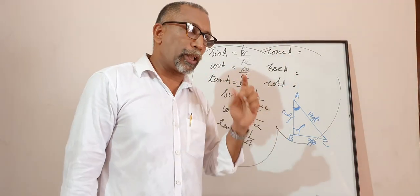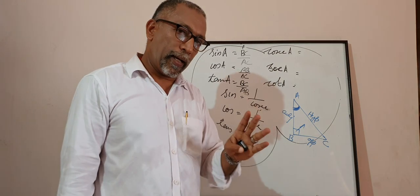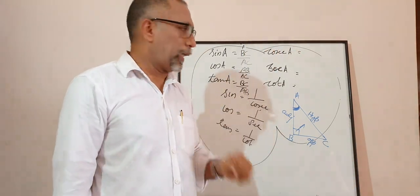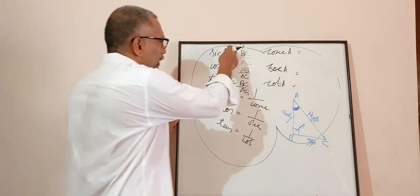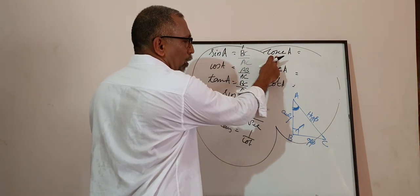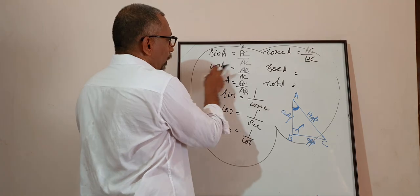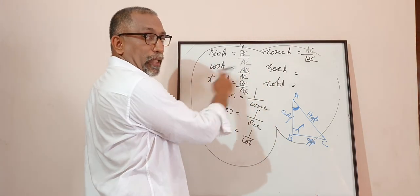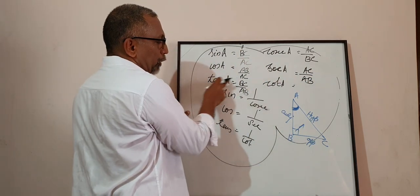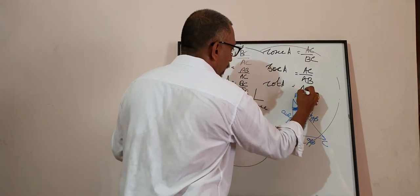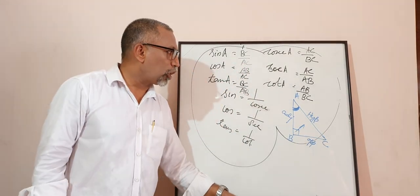Cosec is defined as hypotenuse by opposite side, sec is defined as hypotenuse by adjacent side, and cot is defined as adjacent side by opposite side. But no need to recompute — just flip it. Since sine A and cosec are inverses, BC by AC becomes AC by BC. Since cos A is AB by AC, sec A becomes AC by AB. And since tan A is BC by AB, cot A becomes AB by BC. So this way we can actually define the six trigonometric ratios.